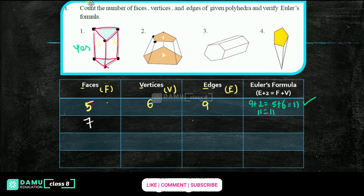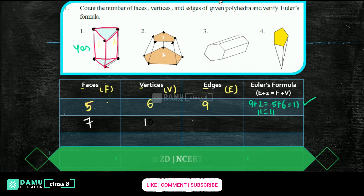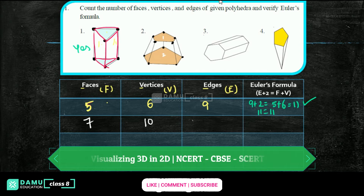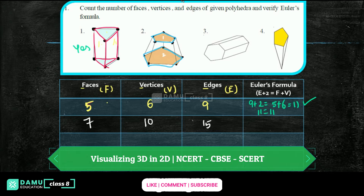Counting vertices: top 1, then 2, 3, 4, 5, 6, 7, 8, 9, 10 — so 10 vertices. For this type of figure, vertices are double the number of sides. Then edges: top 5, down 5, surrounding 5 — so 15 edges.